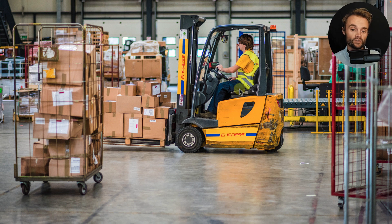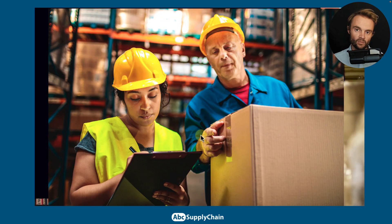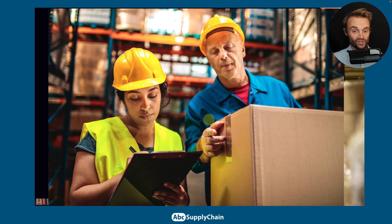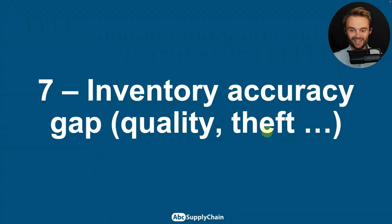Parameter five is the handling cost — the cost to physically move all your inventory. It may be part of your storage costs if you use a third-party logistics provider, but it's still a real inventory cost. Parameter six is the stock control cost, which I like to separate. This includes processes like the annual stock take, where you check the difference between your IT inventory value and the physical inventory. The more inventory you have, the more you pay for this.